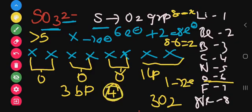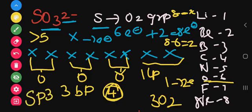Therefore, we have 4 pairs. So SO₃²⁻ has sp³ hybridization.